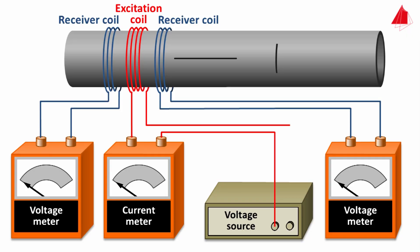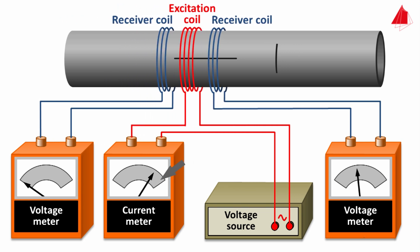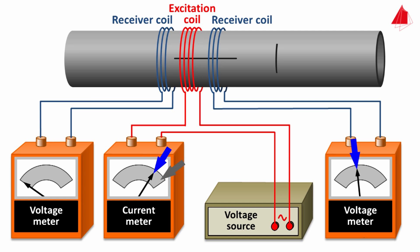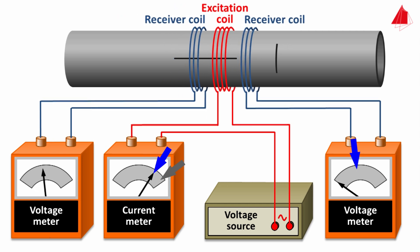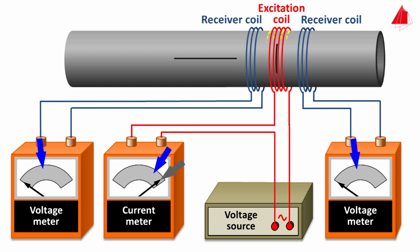The animation shows the physical background. Current consumption is high in the intact area due to undisturbed eddy current flow; because the eddy current's magnetic field doesn't flow through either receiver coil, virtually no voltage is measured on them. As soon as the excitation coil reaches the left end of the longitudinal saw cut, current consumption decreases because the eddy current now flows partly underneath the right receiver coil, inducing a voltage there. When the excitation coil reaches the right end of the longitudinal saw cut, the eddy current partially flows under the left receiver coil and induces a voltage there. Near the circumferential saw cut, the eddy current is undisturbed, its alternating magnetic field flows through neither receiver coil, and the voltage meters indicate almost nothing.